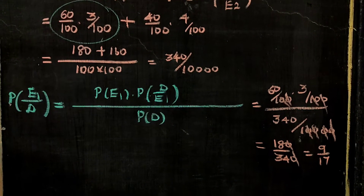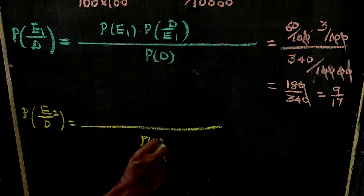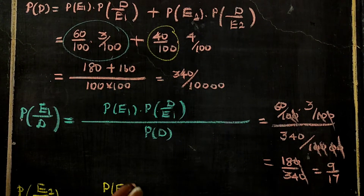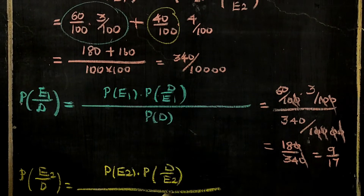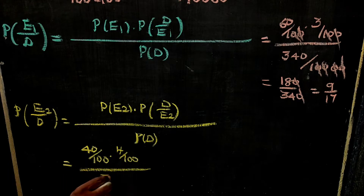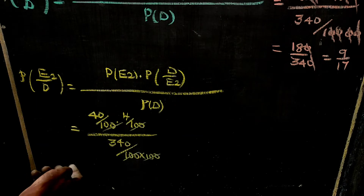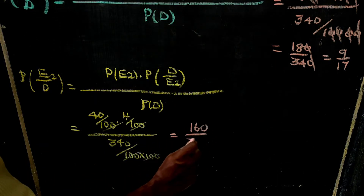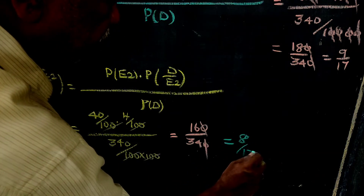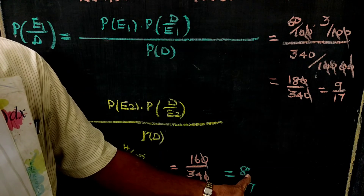So the probability that Engineer-1 caused the defect is 9/17 and the probability that Engineer-2 caused the defect is 8/17. Since 9/17 is greater than 8/17, we conclude that Engineer-1 is more likely to have done the defective work.